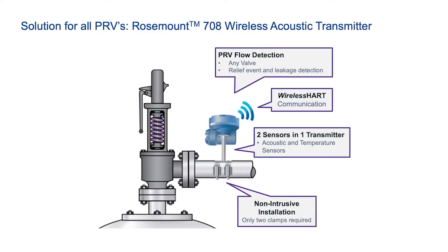The Rosemount acoustic transmitter is affixed to the PRV's outlet piping and measures sound levels in the pipe that occur with a valve opening or closing as well as any temperature change due to flow during an overpressure event.